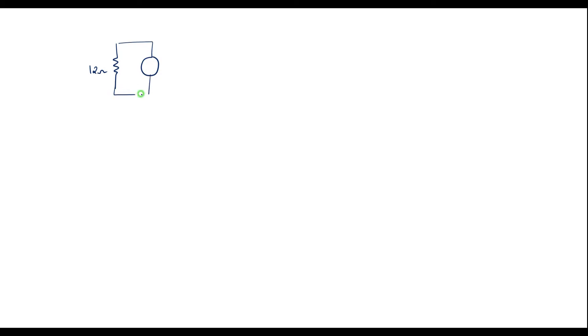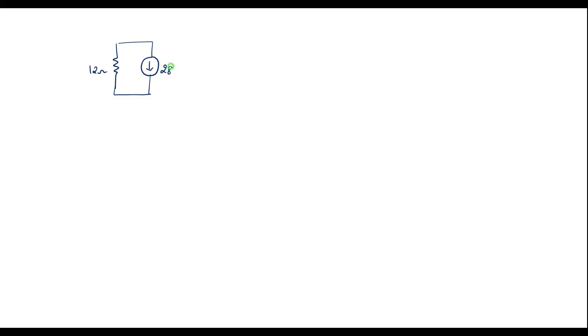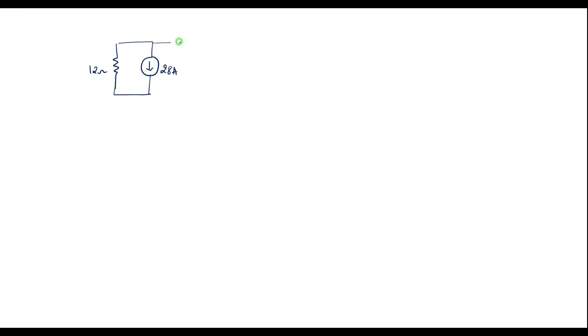Let me redraw the circuit with the 12 ohm resistor as it is. The combined current source has magnitude 10 + 48 − 30 = 28 amps, in the downward direction because the net downward magnitude is greater. The 24 ohm and 6 ohm resistors are in parallel, giving an equivalent resistance R_eq = (24 × 6) / (24 + 6) = 4.8 ohm.